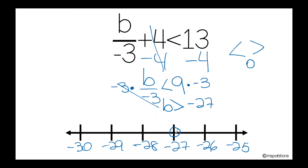But I'm looking for numbers that are greater than negative 27 — so negative 26, negative 25, negative 24, and so on. The arrow should be pointing towards this direction.